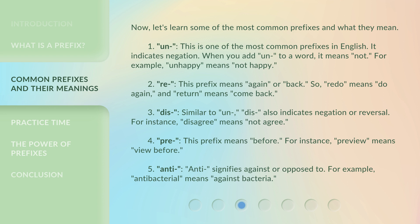1. Un — this is one of the most common prefixes in English. It indicates negation. When you add 'un' to a word, it means 'not'. For example, 'unhappy' means 'not happy'. 2. Re — this prefix means 'again' or 'back'. So, 'redo' means 'do again', and 'return' means 'come back'.